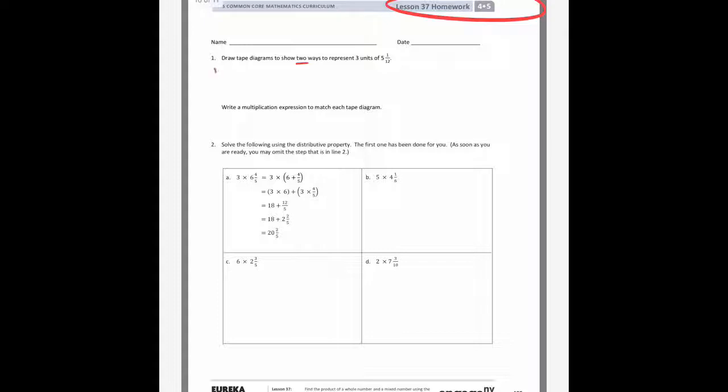So number one, it says draw tape diagrams to show two ways to represent three units of 5 and 1/12. So one way that you could do this is you could just simply do this represents 5 and 1/12, 5 and 1/12, and we're going to do that three times. So one more time after this, and then 5 and 1/12. And the instructions below say write a multiplication expression to match each tape diagram, so this one would just be 3 times 5 and 1/12.